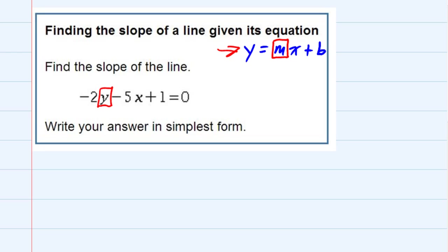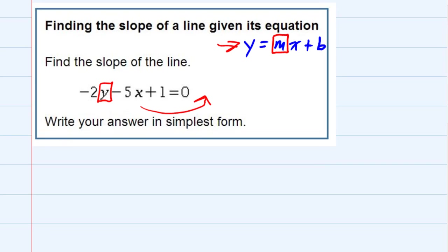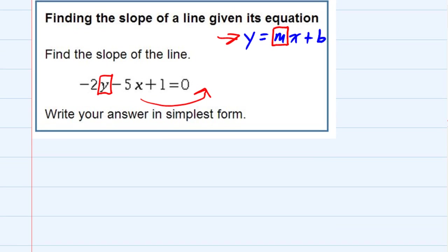That means moving everything else over to the other side. So let's write the equation one more time: negative 2y minus 5x plus 1 equals 0.